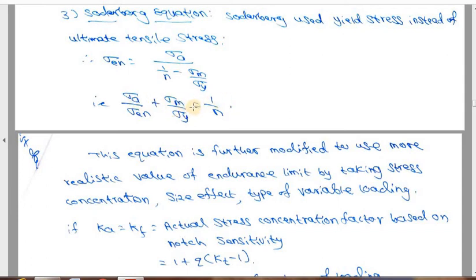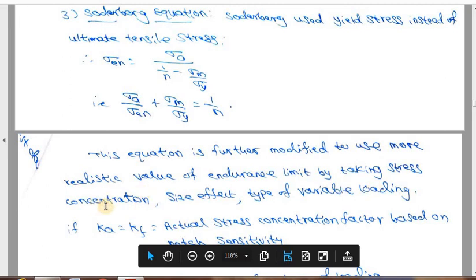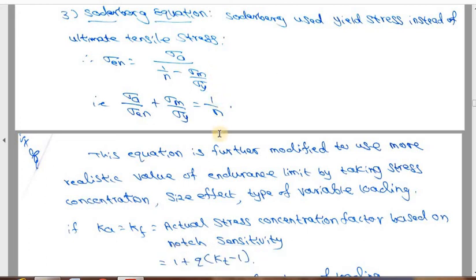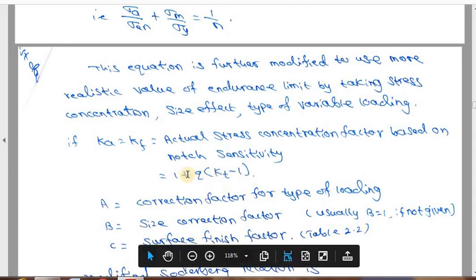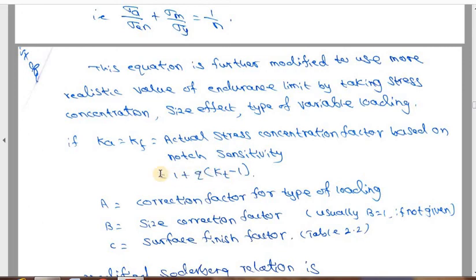These simple equations do not account for the various parameters which influence the endurance limit. Those parameters include stress concentration, size effect, and type of loading. The actual stress concentration factor based on notch sensitivity is K_F (also called K_A), calculated as K_F = 1 + q(K_T − 1), where K_T is the theoretical stress concentration factor and q is the notch sensitivity. This gives the actual stress concentration factor due to fatigue.